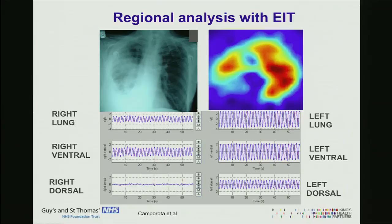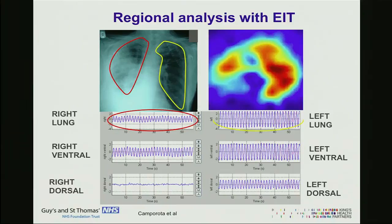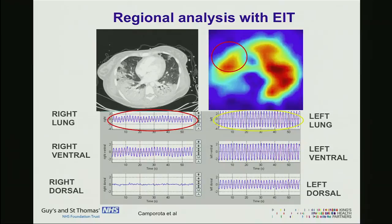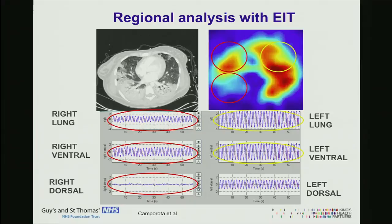This is a chest X-ray. You can see the tidal impedance on the right lung and then the left lung. It's quite clear that the right lung is less ventilated than the left. Comparing it to CT scan at the regional level, we can see that the right ventral region is less ventilated than the left, and the right dorsal region has no ventilation going on compared to the left dorsal.